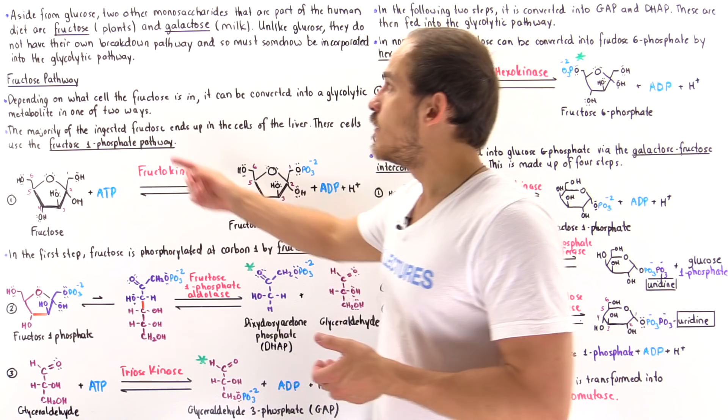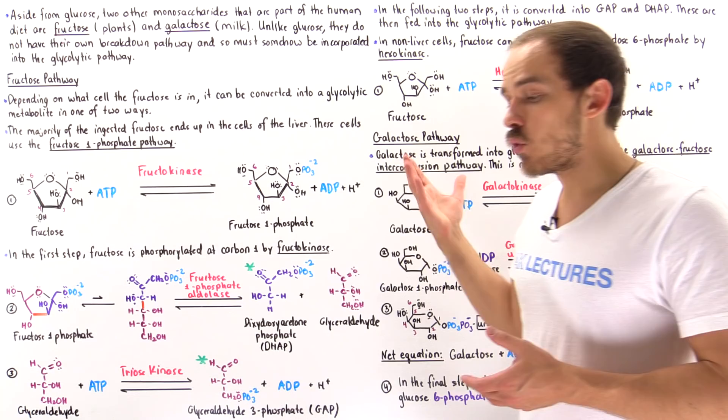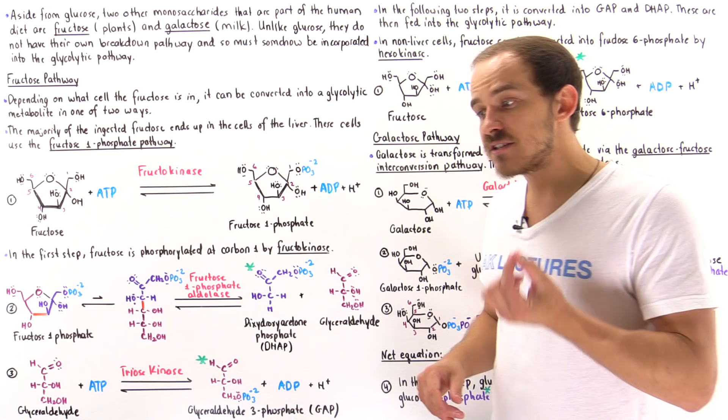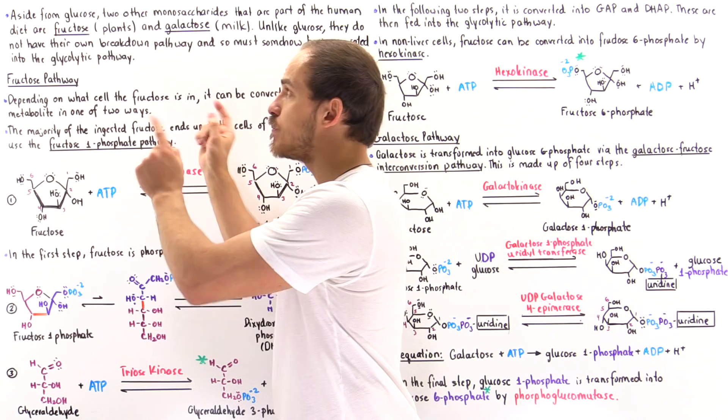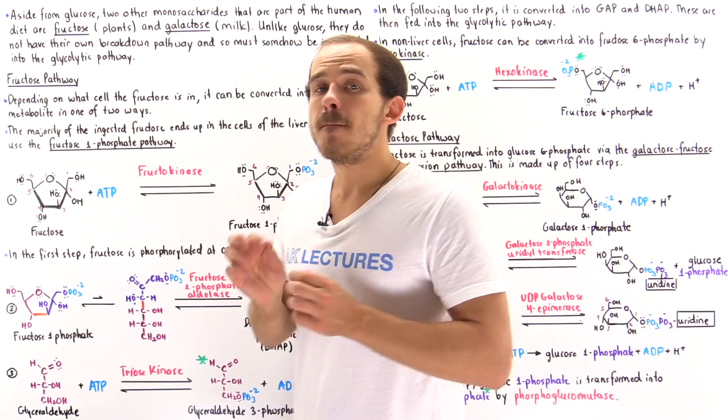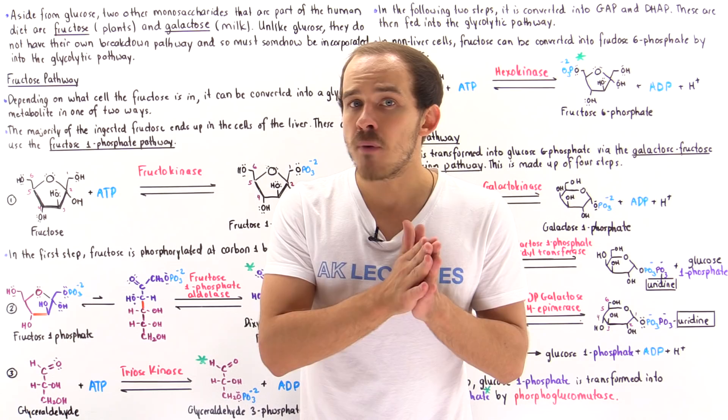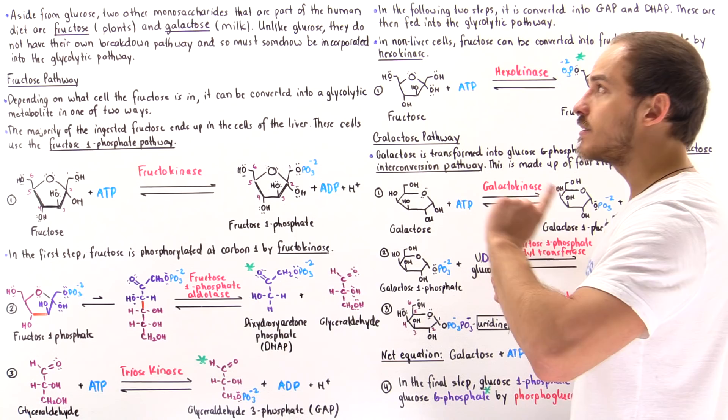Fructose we typically obtain from plants and galactose we typically obtain from milk or dairy products. Unlike glucose, which has its own catabolic pathway in our cells, these two sugars do not have their own individual breakdown pathways. So when fructose and galactose make their way into the cells of our body, they must be transformed into metabolites that are part of the glycolytic pathway, so we can incorporate those glycolytic metabolites into glycolysis.